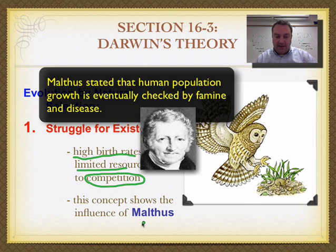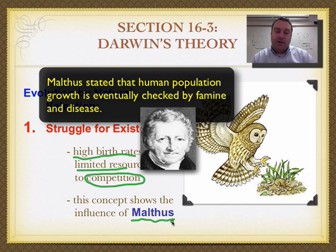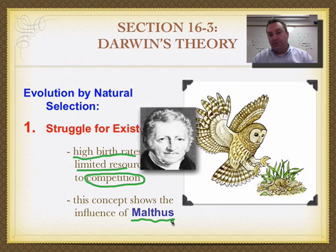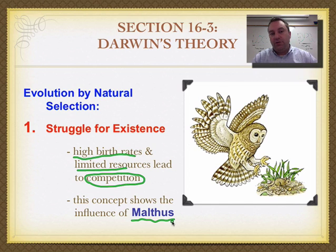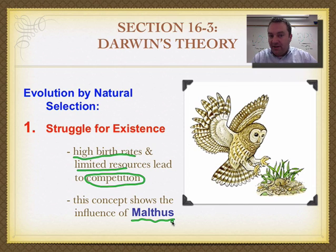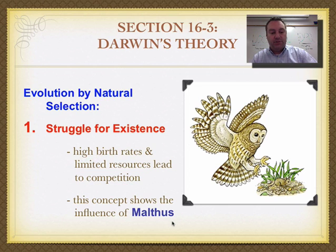This concept comes straight from Thomas Malthus. Malthus said that if there's continually an increase in human population, there's not going to be enough resources to support all these individuals. Darwin noticed that if this applies to human beings who can manipulate their environment, it's definitely going to come into play in the natural world where organisms have less ability to do so. So some are going to survive and some are not because there's competition for limited resources.